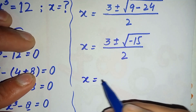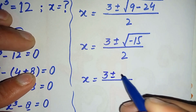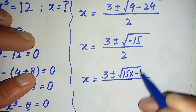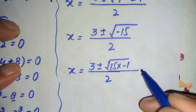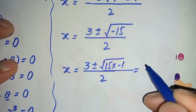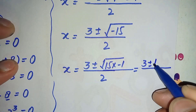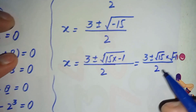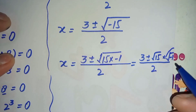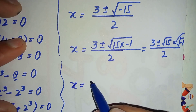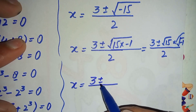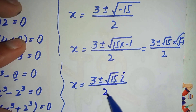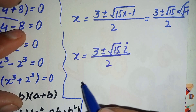We rewrite minus 15 as 15 times minus 1. Splitting the square root gives us the square root of 15 times the square root of minus 1. Since the square root of minus 1 is the complex identity iota (i), we get x equals 3 plus or minus square root of 15 times i, divided by 2.